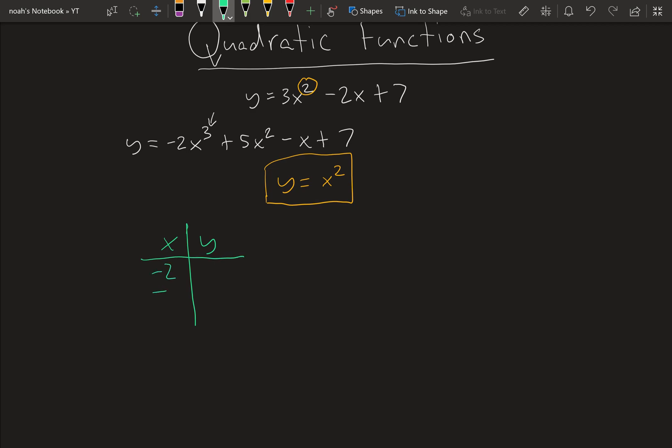So for x, let's do negative 2, negative 1, 0, 1, and 2. And for y, so negative 2 squared is 4, negative 1 squared is 1, 0 squared is 0, 1 squared is 1.